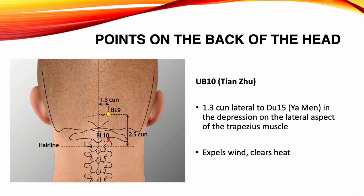Urinary Bladder 10, Tian Chu. Location: 1.3 Sun lateral to Du 15, in the depression on the lateral aspect of the trapezius muscle. Functions: expels wind, clears heat. Indications: headache, neck rigidity, vertigo, nasal obstruction.